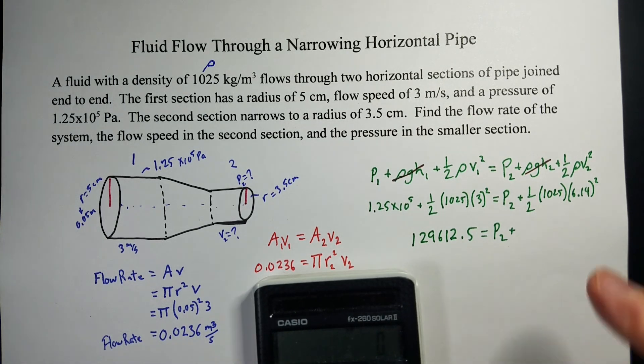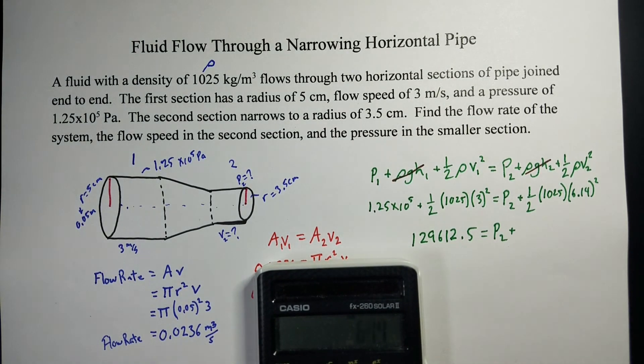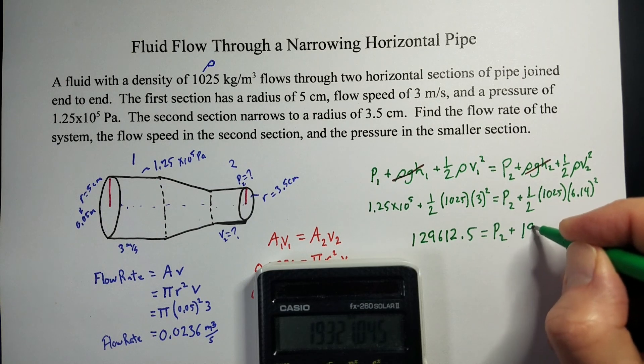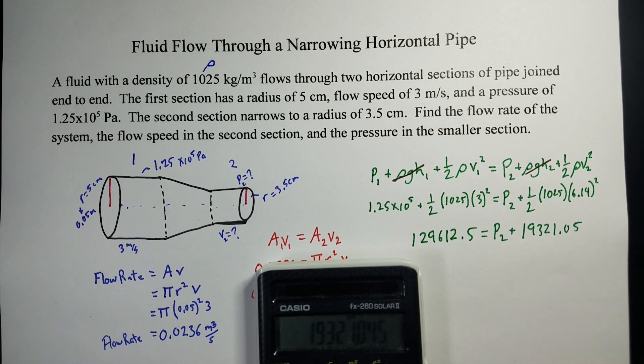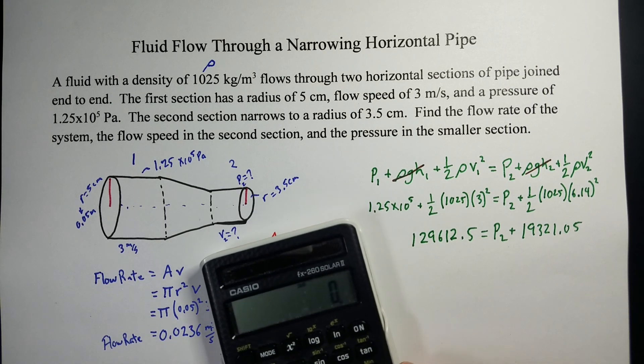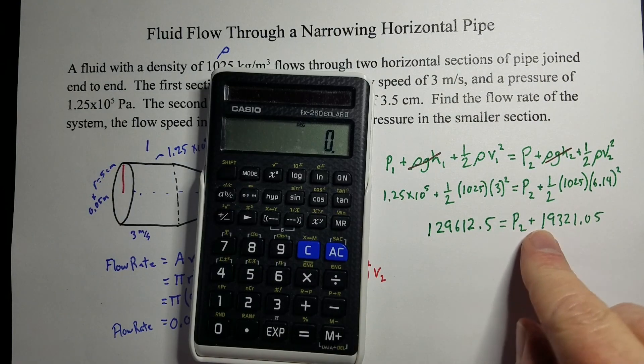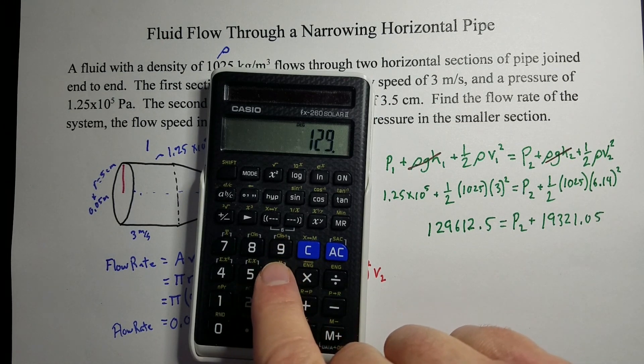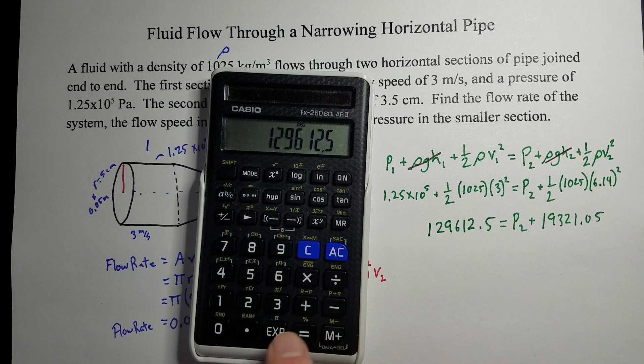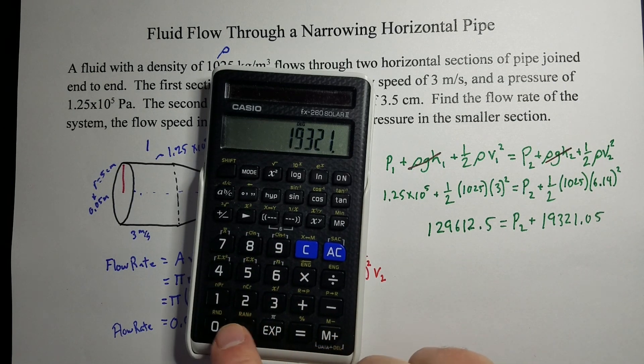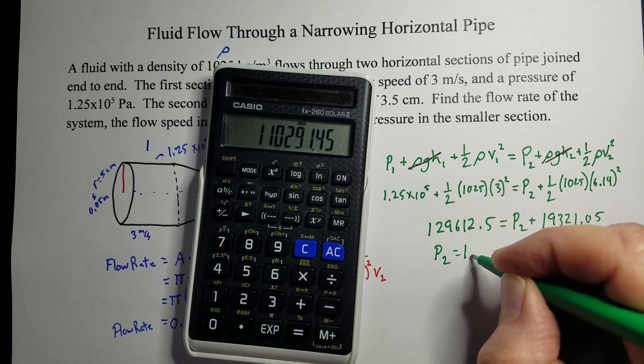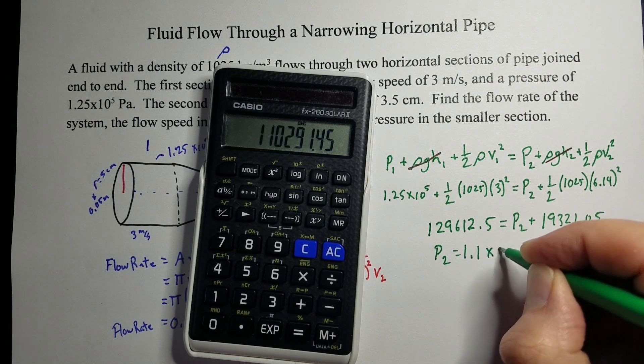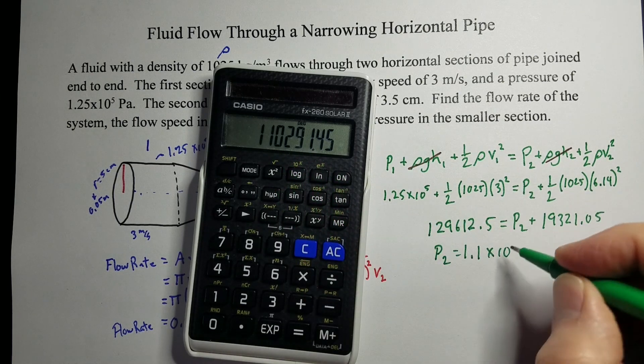In the second section, we're looking for the pressure. We know the velocity in this section because we've got it down here. So, it's 1,025 times 6.14 squared. And now, we just throw that into our handy calculator. So, let's add up this or calculate this side. So, 6.14 squared times 1,025 divided by 2 is 19,321.05. So, I want to move that to the other side. We're going to subtract that from both sides. So, we're going to do 129,612.5 minus 19,321.05 and we get a pressure of 1.1 times 10 to the fifth Pascals for that smaller section.